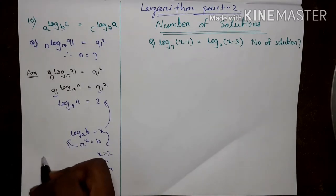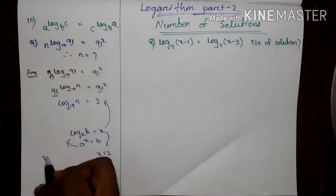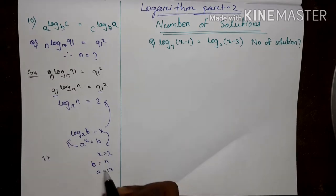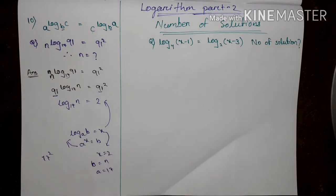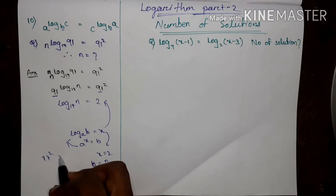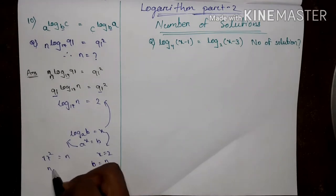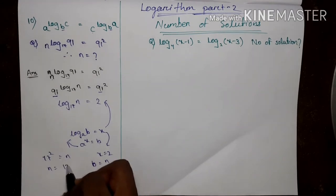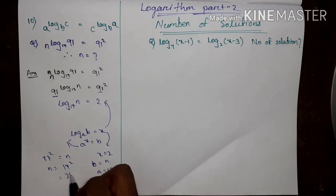So A equals 17, X equals 2, B equals N. Then N equals 17 squared, that is 289. That is our answer.